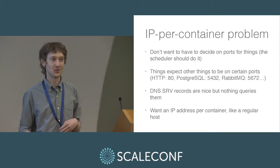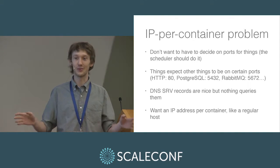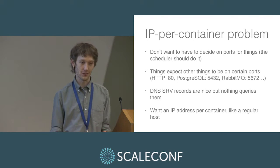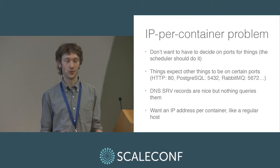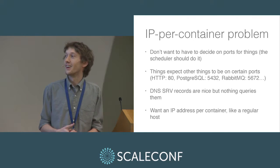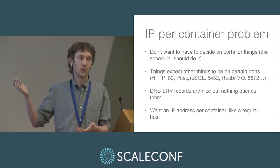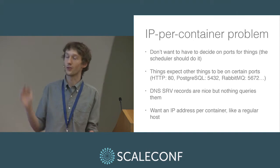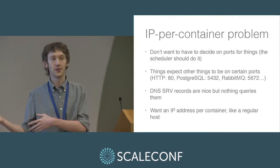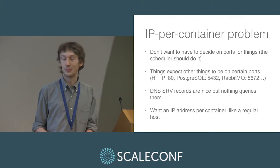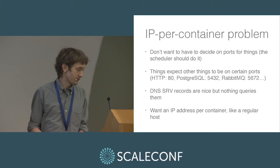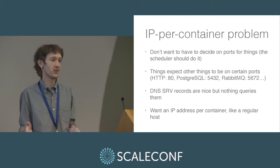I'm putting this problem under one name: the IP per container problem. You don't have to have an IP per container for these things to work, but this is what I'm calling it. Essentially, once we have container orchestration and a scheduler, we don't want to decide on the ports for things — we want the containers to just dynamically be assigned ports because otherwise we're doing too much work. But the problem is: how do we know what port a container is on? And certain protocols are just expected to be on certain ports. What you can do is put the address and port in DNS in your SRV records, but unfortunately not that many things actually query the ports from DNS. What we really want is an IP address for each container so we can treat it just like another host.